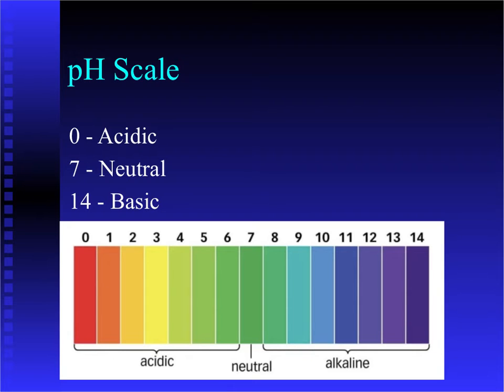So one more time, here's the pH scale. So anything that is below 7 is considered an acid because it has more positively charged ions than it does negatively charged ions.